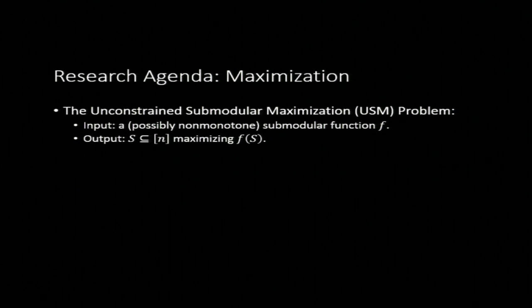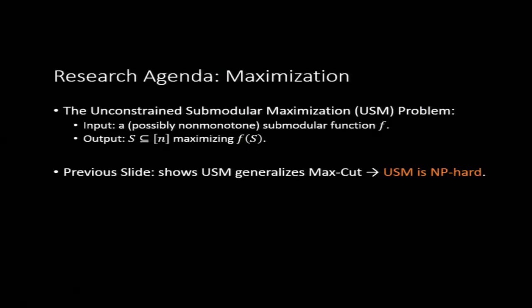So here's the offline USM problem. Offline, we're given naturally one of these functions F, and all we want to do is we want to maximize that function. So we want to find the set S to plug in that maximizes the function value. If you think a little bit about the example I just showed you on the previous slide, this cut function, you might realize that USM is actually a generalization of the max cut problem. And because maximum cut is NP-hard, naturally the USM problem is NP-hard as well. So we're going to have to settle for a little bit less than trying to solve it exactly. Basically, we'll just ask the question, how well can we approximately compute one of these maxima in polynomial time?